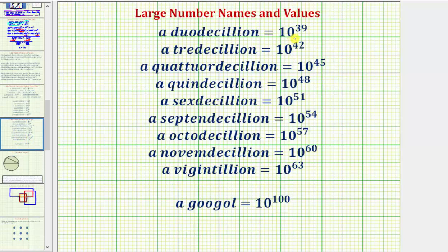A dodecillion is equal to 10 raised to the power of 39. A tredecillion equals 10 raised to the power of 42. A quattrodecillion is equal to 10 raised to the power of 44. A quindecillion is equal to 10 raised to the power of 48. A sextecillion equals 10 raised to the power of 51. A septendecillion is equal to 10 raised to the power of 54. An octodecillion is equal to 10 raised to the power of 57. A novemdecillion is equal to 10 raised to the power of 63. A vigandecillion is equal to 10 raised to the power of 63.